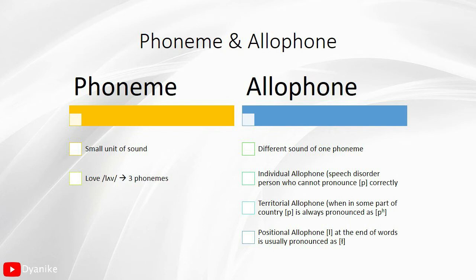Now we discuss phoneme and allophone — the small parts of phonology or pronunciation. A phoneme is the smallest unit of sound. For example, the word 'love' has three phonemes. But with allophone, it is a different sound of the same phoneme. For example, 'love' could have a different sound for one of its phonemes. In the next slide, you will see a clearer example of the differences between phoneme and allophone.